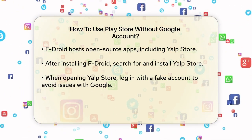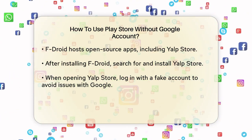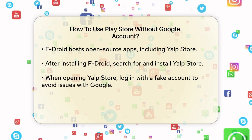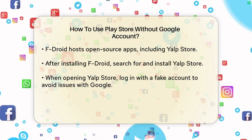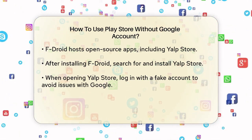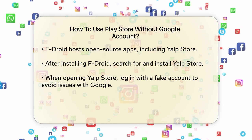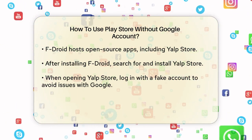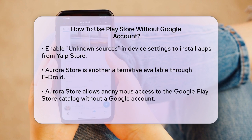Once you have Yalp Store installed, open it and you'll be prompted to log in. You can choose to log in with a fake Yalp Store account, which is recommended to avoid any issues with Google's Terms of Service — using a Google account here could result in your account being suspended. After logging in, you can search for your favorite apps, download them, and install them directly on your device. Make sure to enable the Unknown Sources option in your device's settings to allow the installation of apps from Yalp Store.